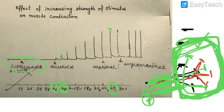That's all regarding the effect of strength of the stimulus on muscle contraction. Questions in this topic may include: the motor unit definition, the all-or-none law, and the definitions of sub-threshold, threshold, maximal, and supramaximal stimuli — all of which we have covered. That's all regarding this graph.